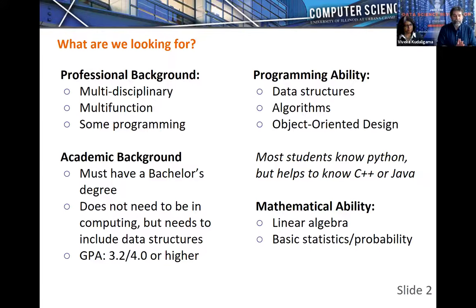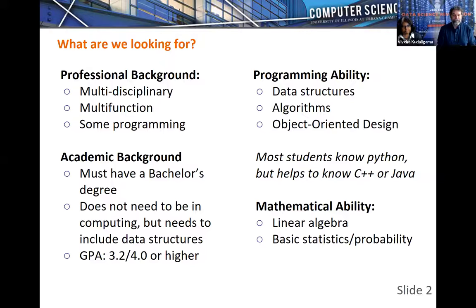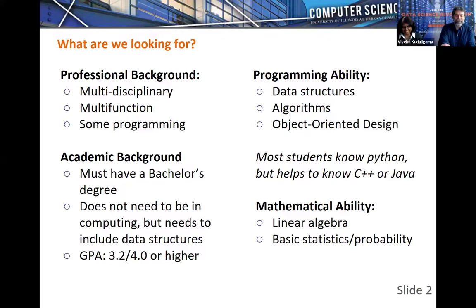You'll be learning computer science across at least four different breadth areas. It will involve programming. We offer the Master of Computer Science and the Master of Computer Science and Data Science. The MCS DS is the same MCS degree, but completed through data science coursework. As Viveka reminds me, this is for students that are applying internationally, not that have been admitted yet. So let me give you some information about what to put into the application packet.